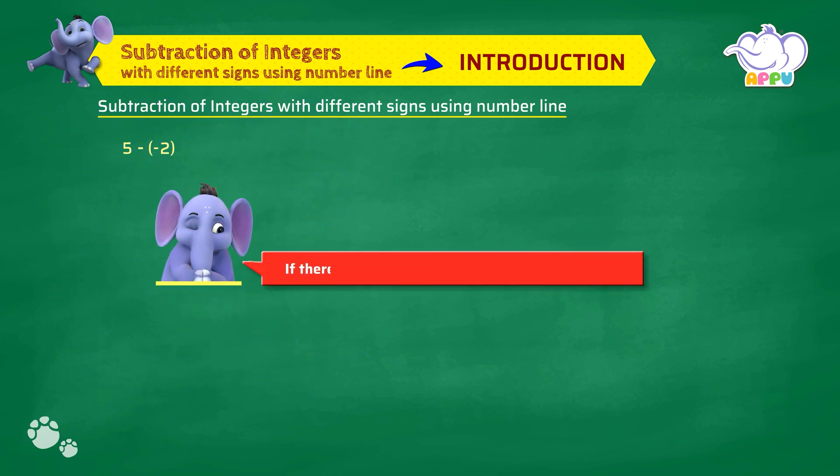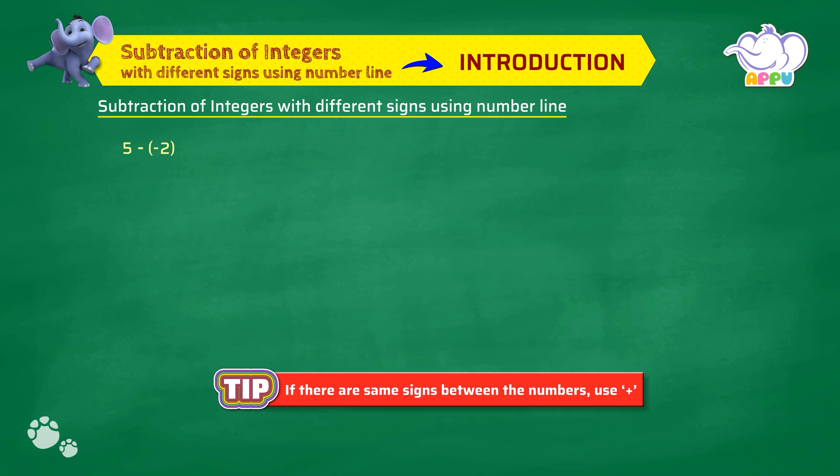If there are same signs between the numbers, use plus. We have same signs here. So, this becomes 5 plus 2.